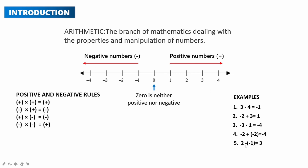The last example is 2 minus negative 1. From the rule, negative times negative equals positive, so it becomes 2 plus 1, which equals 3. Moving in the right direction on the number line. It's very important to understand this because questions in this topic will require you to understand the number line.